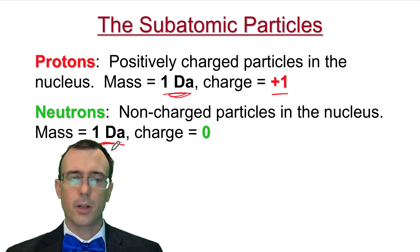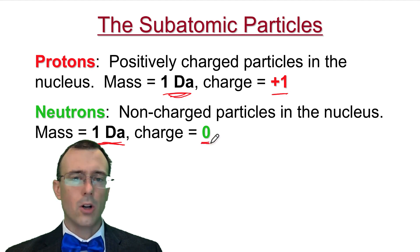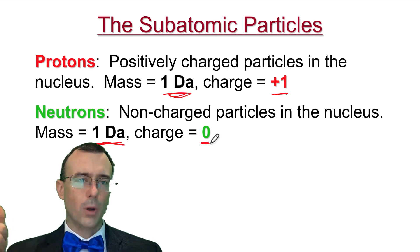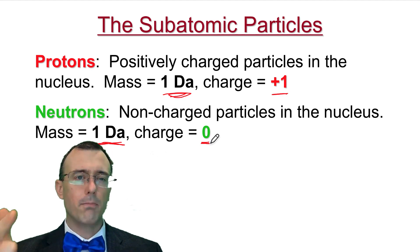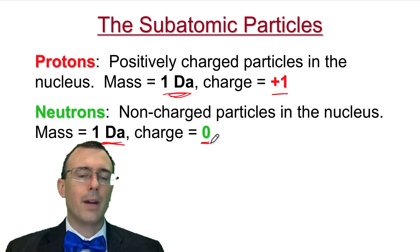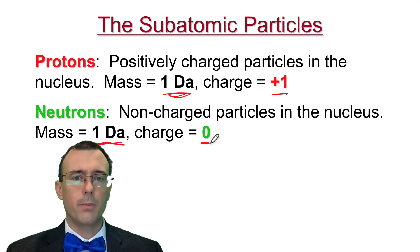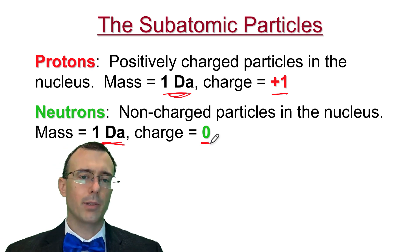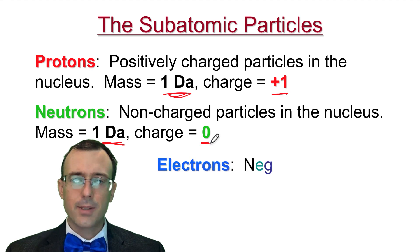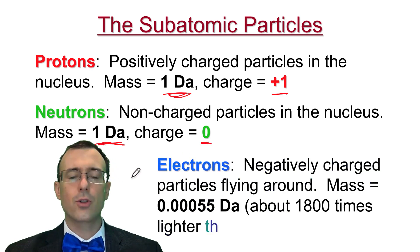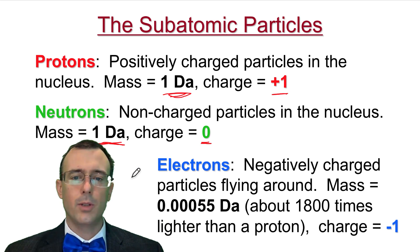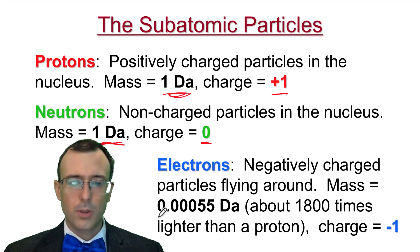Your neutrons are uncharged particles in the nucleus, and so they have a charge of 0. Your mass number is your number of protons plus neutrons, because most of the mass of an atom is going to be composed of protons and neutrons. Each of them has a mass of about 1, so the approximate mass of one particular atom is going to be the number of protons plus the number of neutrons. The electrons themselves do have mass, but their mass is so light that it doesn't really contribute to the total mass very much.